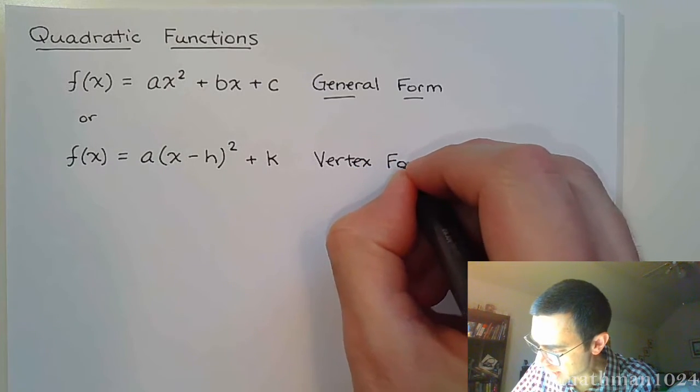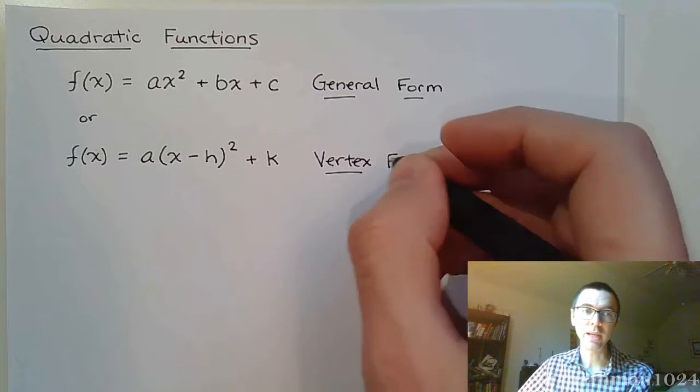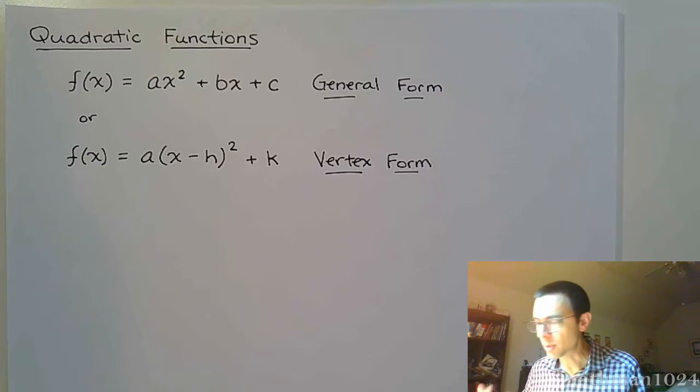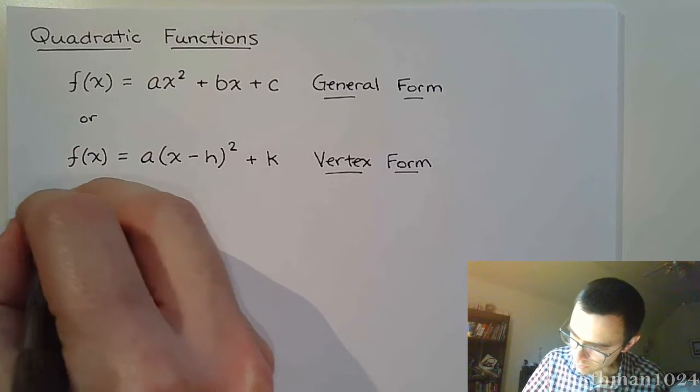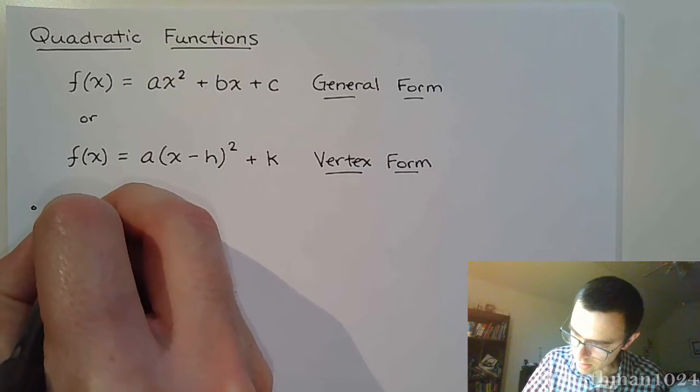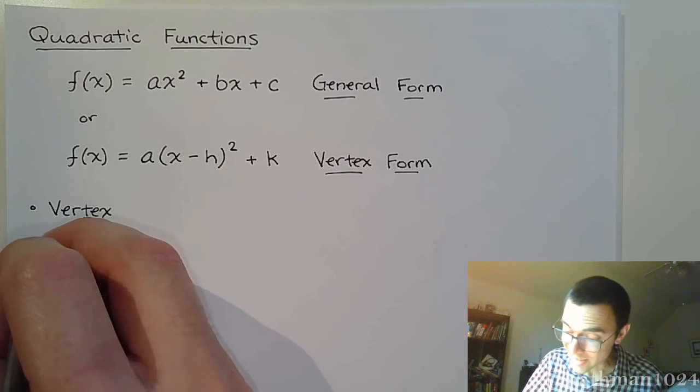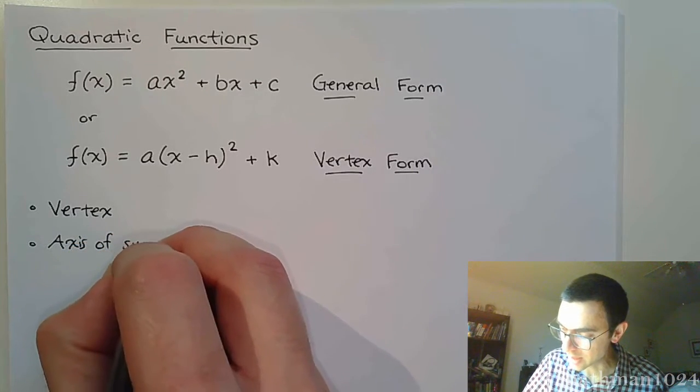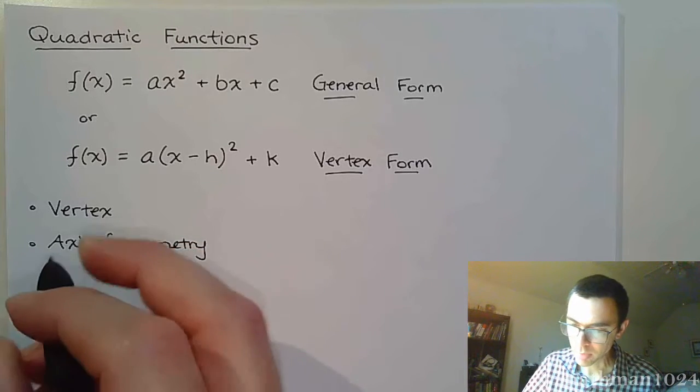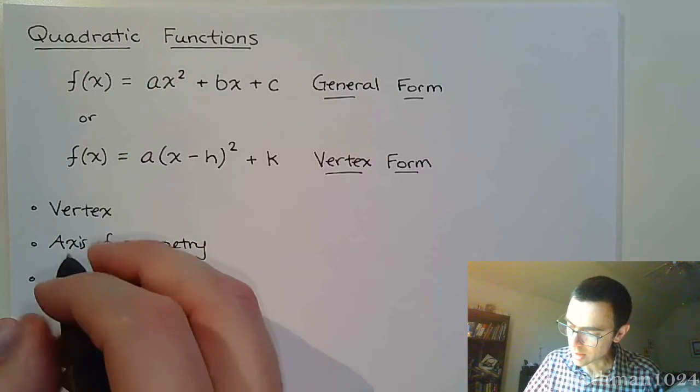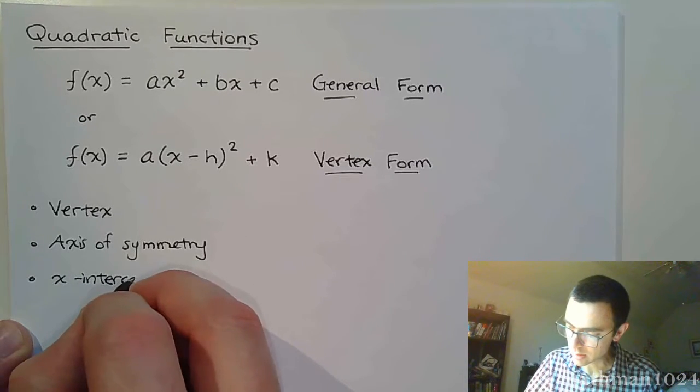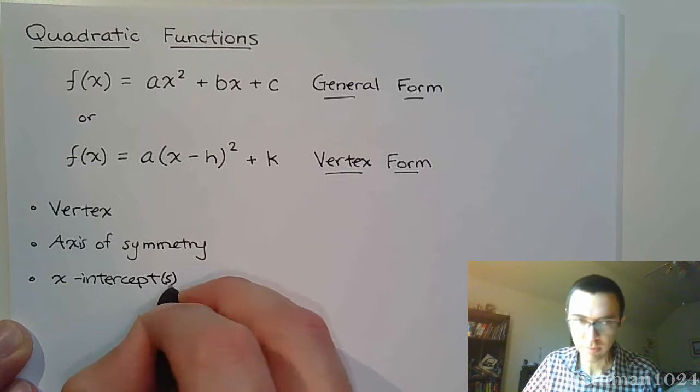Now both of these forms have things going for them and also things that are going against them. So what I want you to understand is what we're going to be looking at for all of these quadratic functions. For almost every quadratic function, we want to be finding these things. We want to find the vertex, which basically instantly gives us the axis of symmetry. Sometimes that's just referred to as the line of symmetry. We want to find the x-intercepts, if we have any.